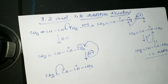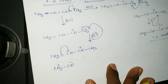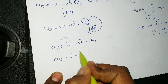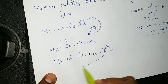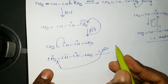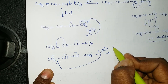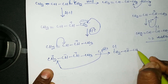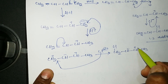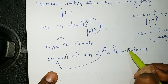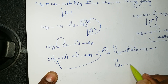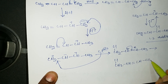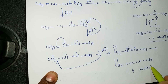After the bond shifts, we get CH2⁺–CH=CH–CH3. Now the second step is Cl⁻ attacking the fourth position. Cl⁻ attacks the fourth position, giving CH2Cl–CH=CH–CH3. Here there is a negative and positive charge arrangement, so with bond shifting we get the final product: CH2Cl–CH=CH–CH3. This is the 1,4 addition reaction.